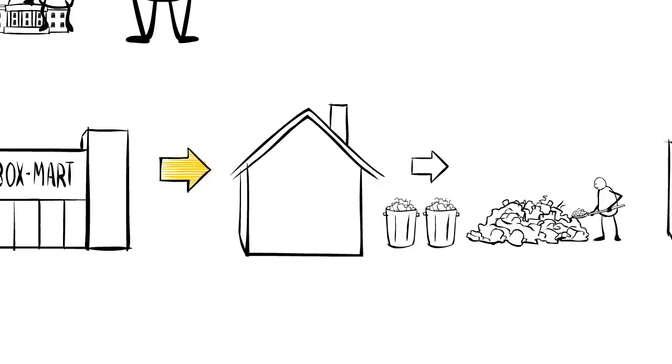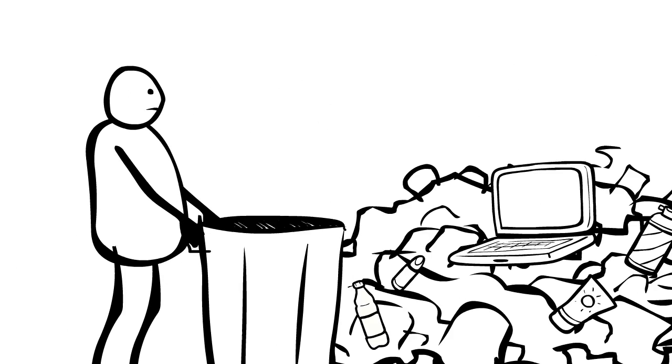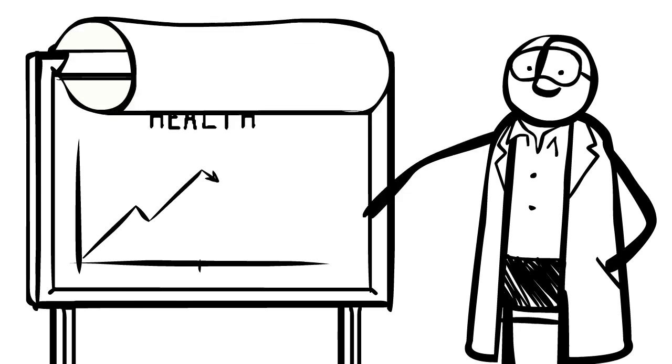In Season 1 of The Story of Stuff, we looked at a system that creates way too much stuff, and way too little of what we really want.